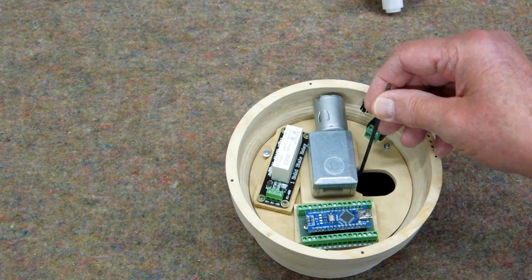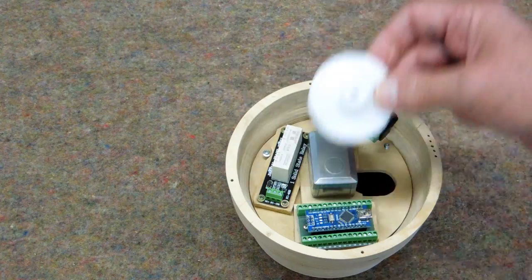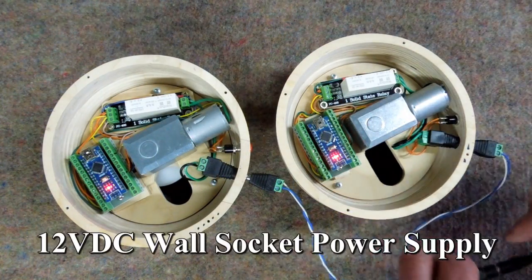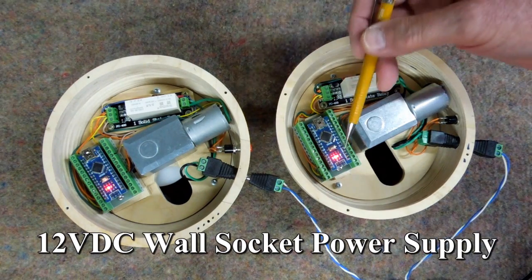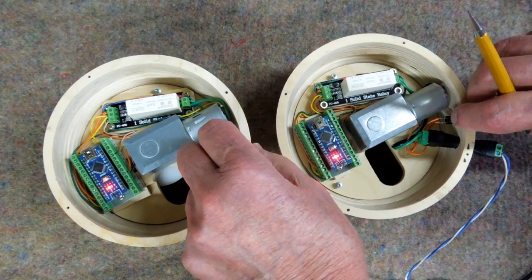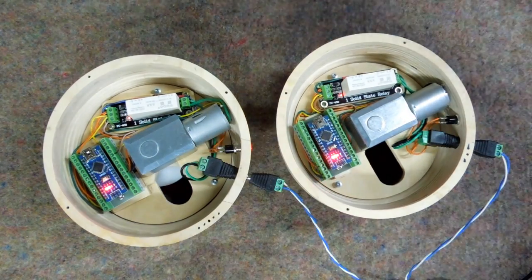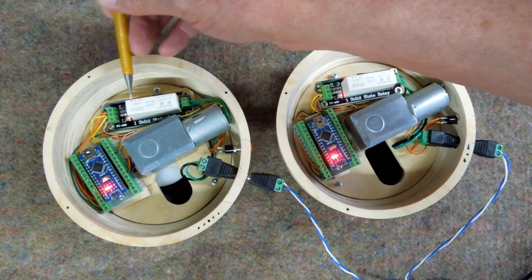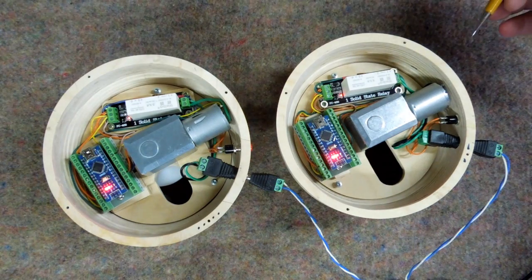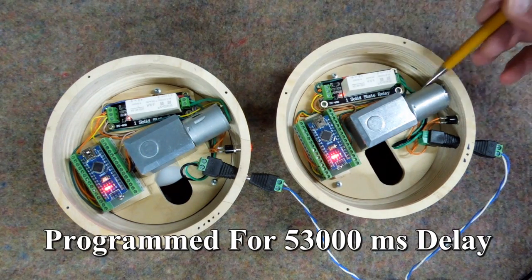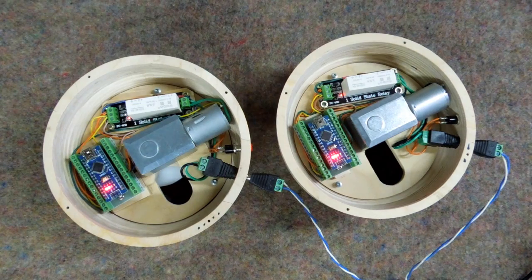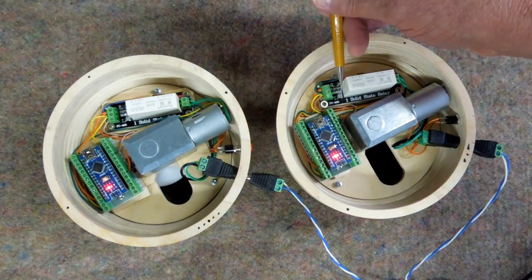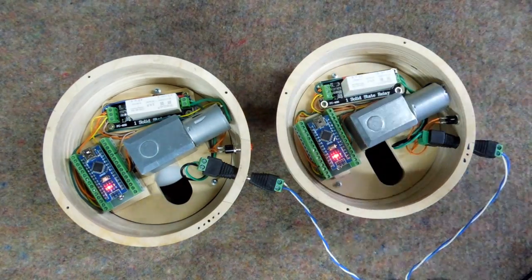And this cutout is here so I can tighten the set screw that holds this onto the motor shaft. Connect the power supply. The Nano wakes up. When we push the button, the LEDs on the Nano and the relay come on. The LED on the relay tells you the solid state relay is closed and the motor will run for 53,000 milliseconds or 53 seconds. The LEDs go out and the motor has stopped.